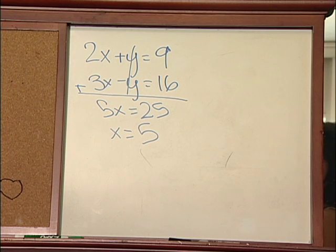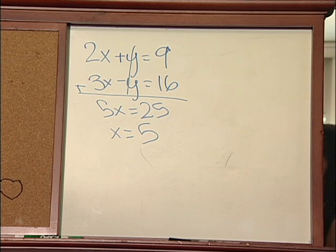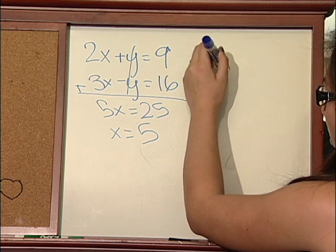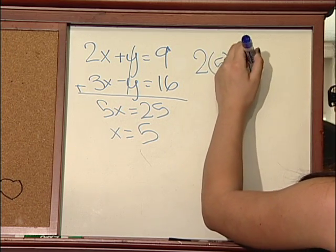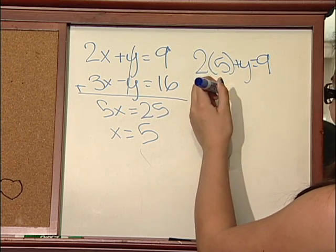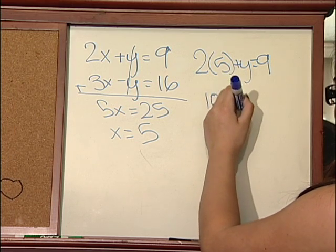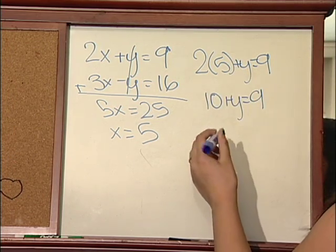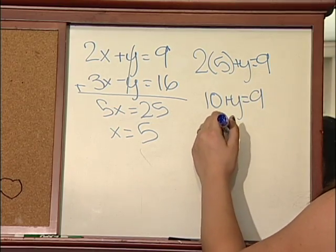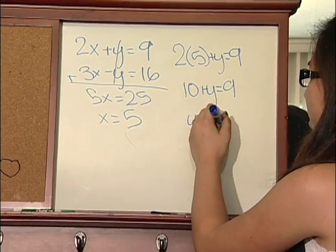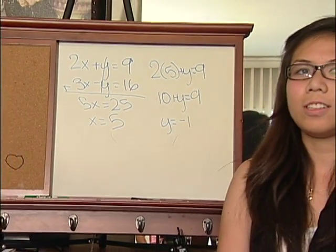Now you can input x into any of the equations. I'm going to plug it into 2x plus y equals 9, which gives 10 plus y equals 9. Then solve for y by subtracting 10 from both sides, and it'll leave you with negative 1. And that's how you use the addition method.